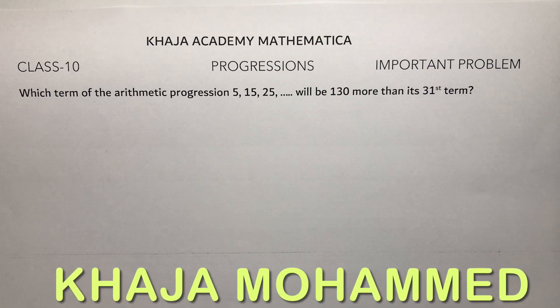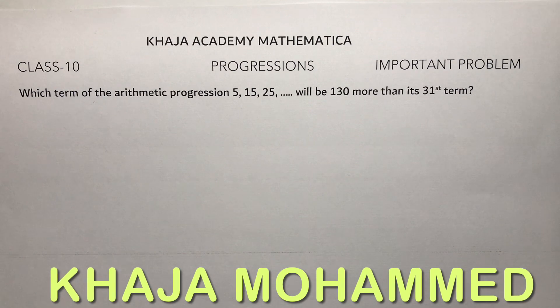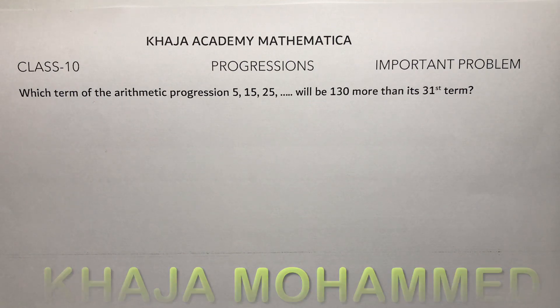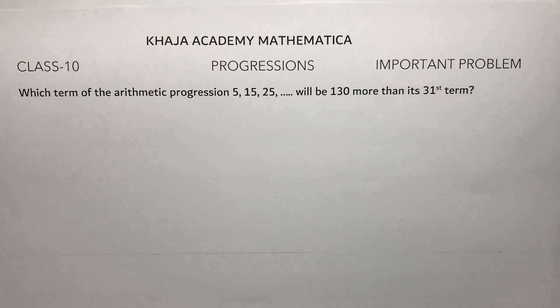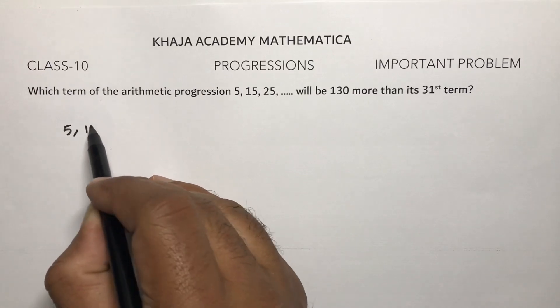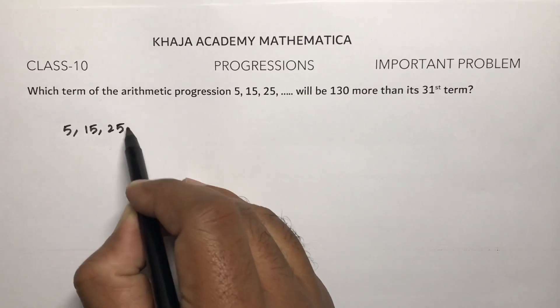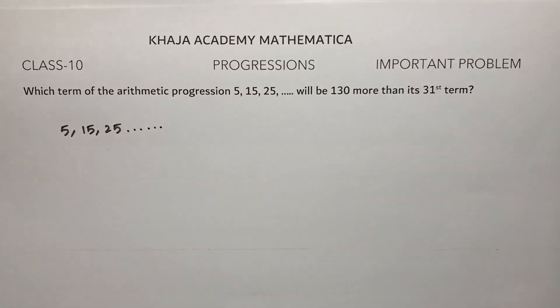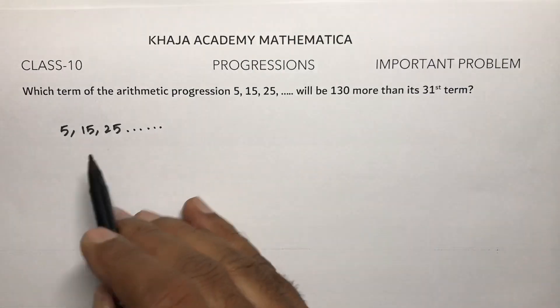Class 10 important problem from progressions: which term of the arithmetic progression 5, 15, 25... will be 130 more than its 31st term? So here the series is 5, 15, 25 and so on. Which term will be 130 more than its 31st term?